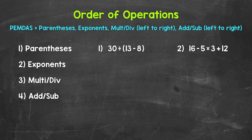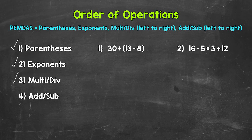As far as the order of operations, we start with parentheses. Parentheses are priority number one. If we see parentheses in an expression, we start there. Then we have exponents, then multiplication and division. Multiplication and division are on the same level — they are the same priority in the order of operations. So if we have both, we work from left to right.